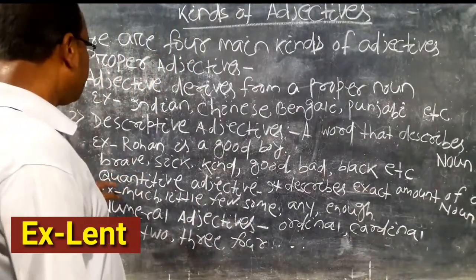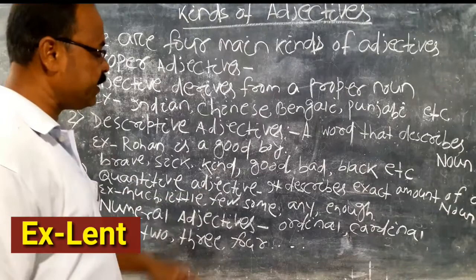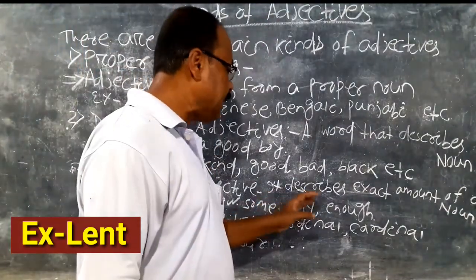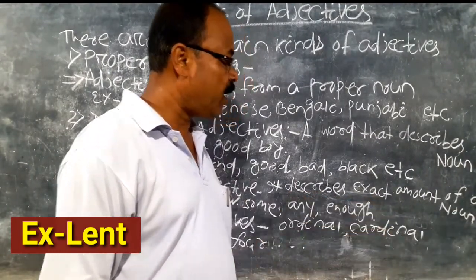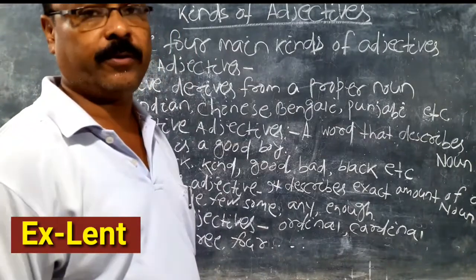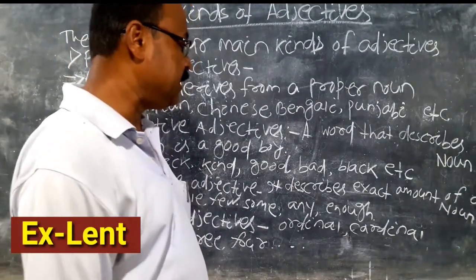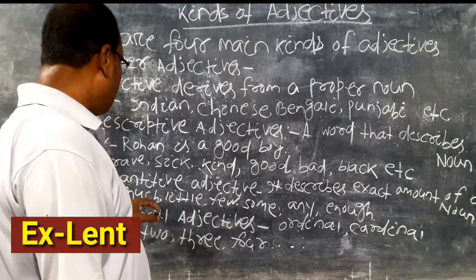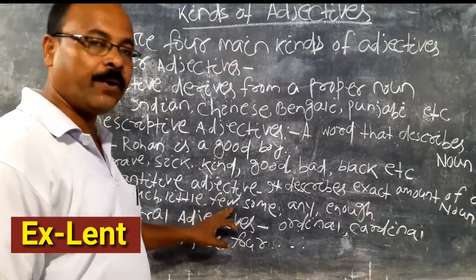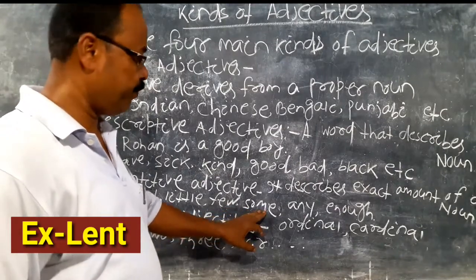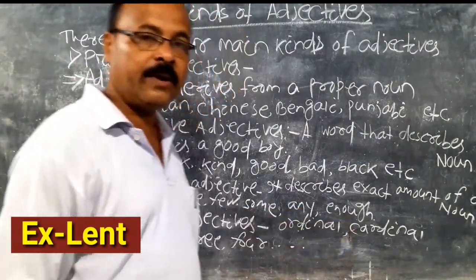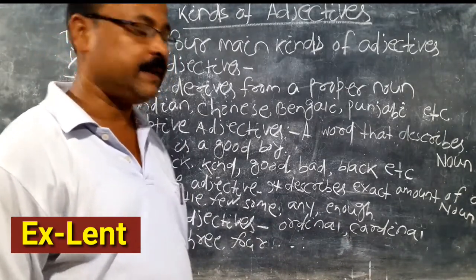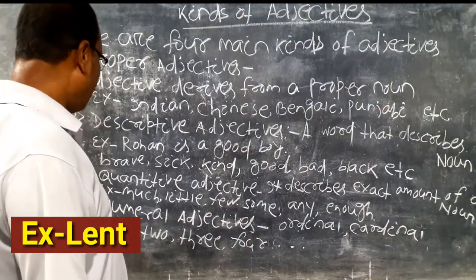Number three: quantitative adjectives. A quantitative adjective describes the exact amount of a noun. For example: much, little, few, some, any, enough — these are examples of quantitative adjectives.